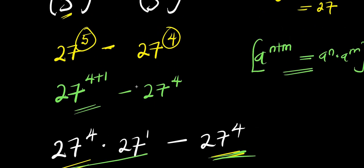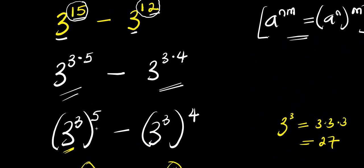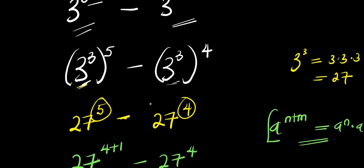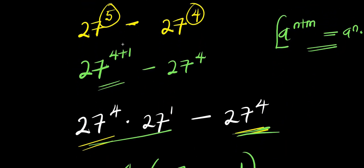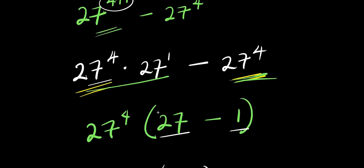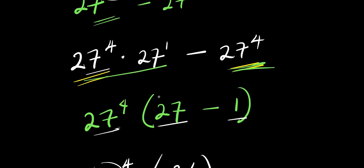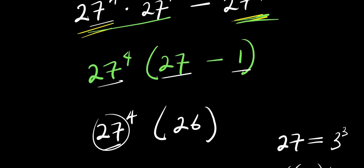So, ladies and gentlemen, this is how you can evaluate this step by step, and you will not have any problem because a calculator will not be needed. The first major step is to express 15 as product of 3 and 5, then make use of the identity. Find the value of 3 power 3, convert to 27 power 5 minus 27 power 4, express 5 as 4 plus 1, apply the identity, factor out 27 power 4, then find 27 power 4 times 26 to get the answer. Thank you and goodbye.